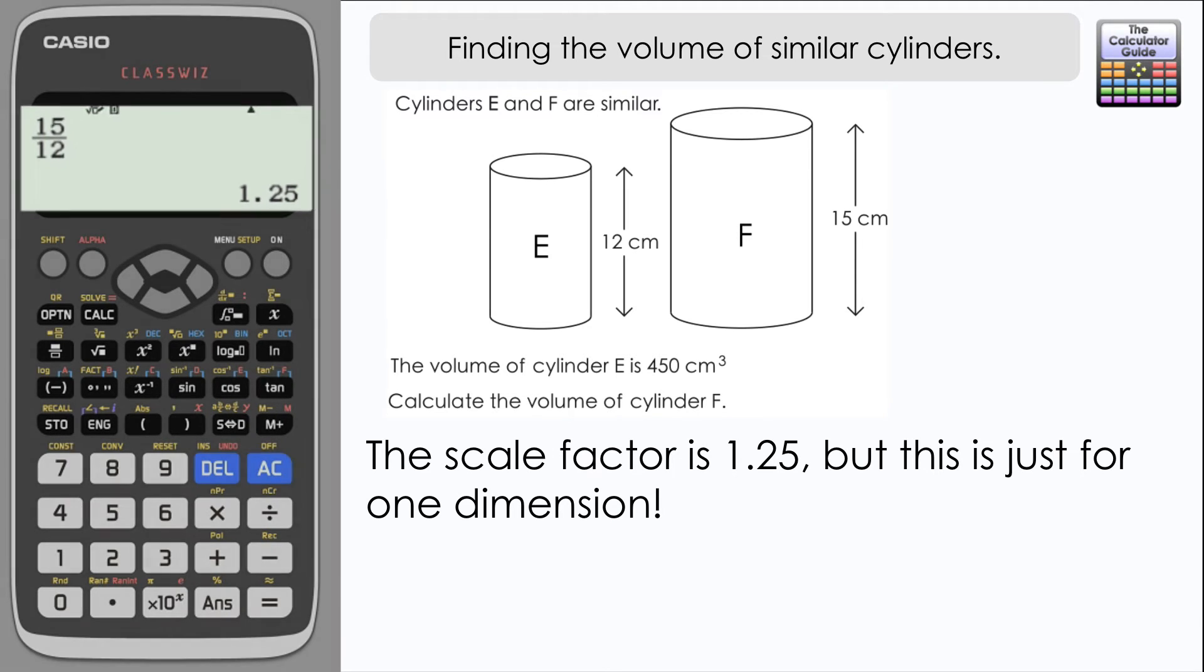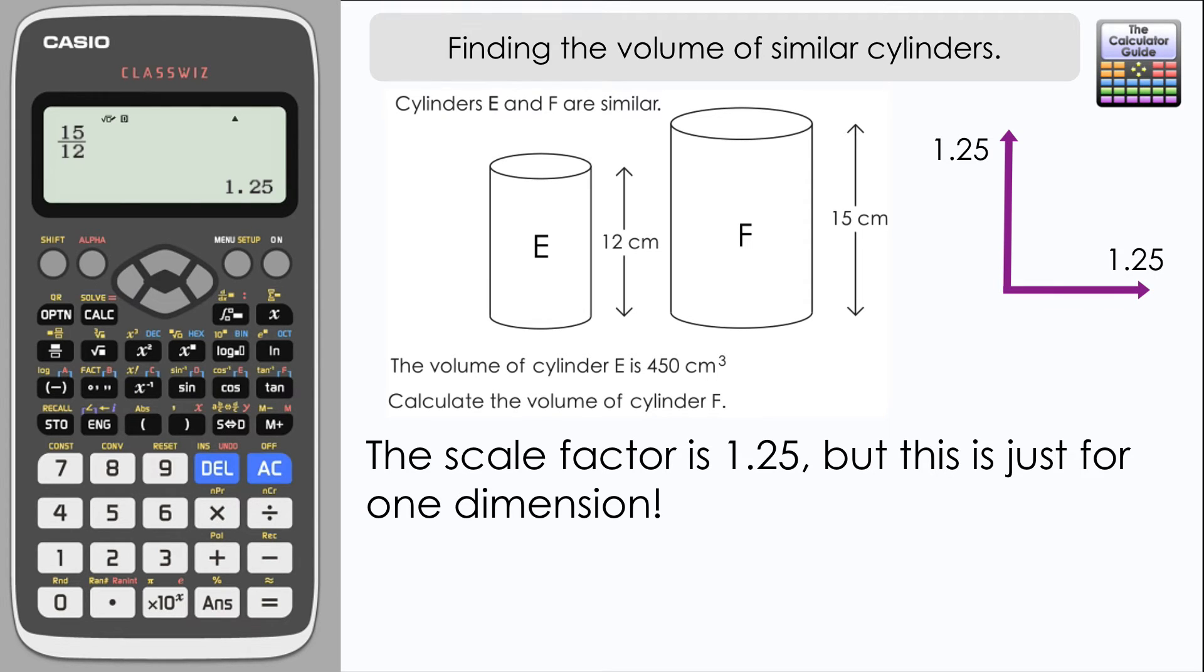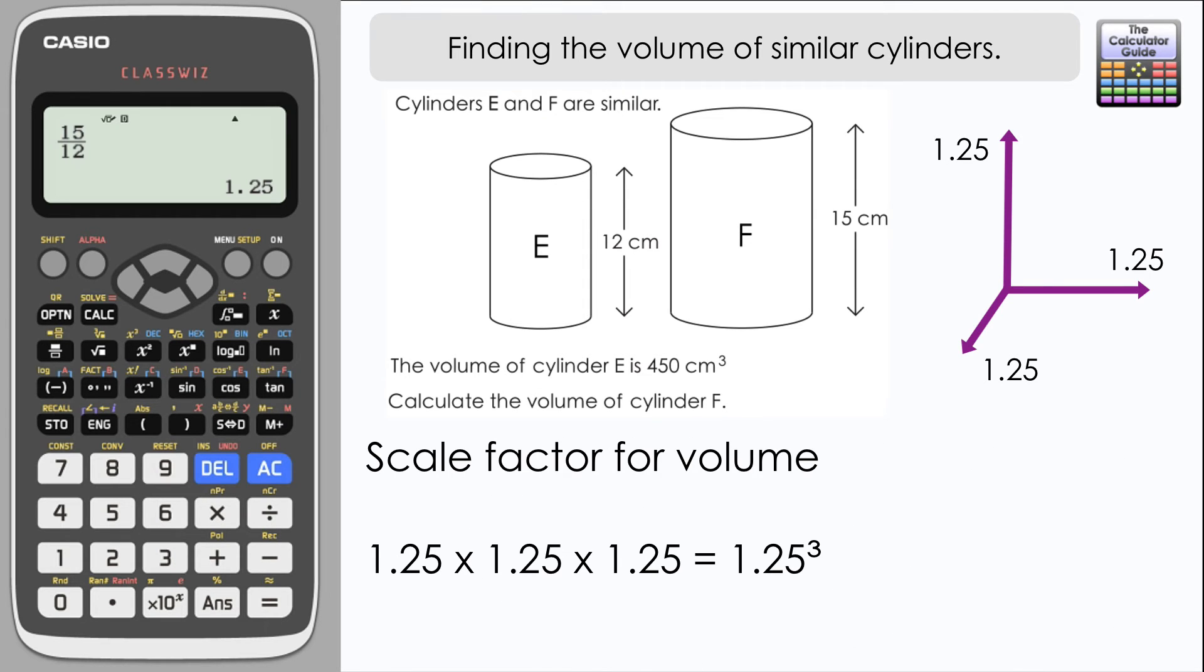That scale factor of 1.25 is just for one dimension, so it's just for the height of the cylinders. Now we have a three-dimensional shape here. So whilst cylinder F is 1.25 times taller or higher than cylinder E, it is also 1.25 times wider and 1.25 times deeper, or the dimension that would appear to be going in and out of the screen. So 1.25 times 1.25 times 1.25.